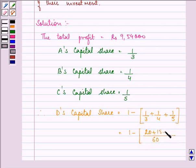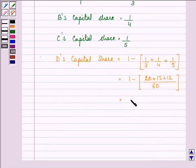20 plus 15 plus 12. This is 60 minus 47 upon 60, giving us the answer as 13 by 60. So D's capital share in business is 13 by 60.